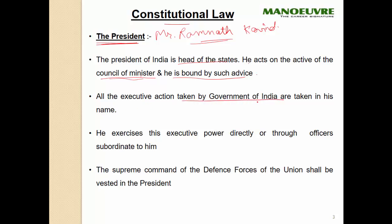Whatever treaties or agreements the government of India signs — in foreign affairs or otherwise — all are signed and delivered in the name of the president. He exercises executive power directly or through officers subordinate to him. He can delegate and ask the prime minister, vice president, or other council of ministers to act on his behalf. That is his delegation power.